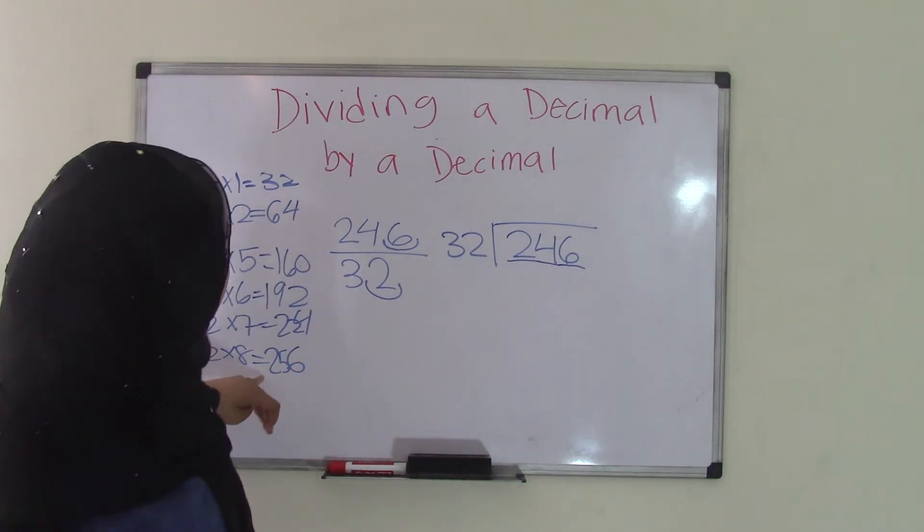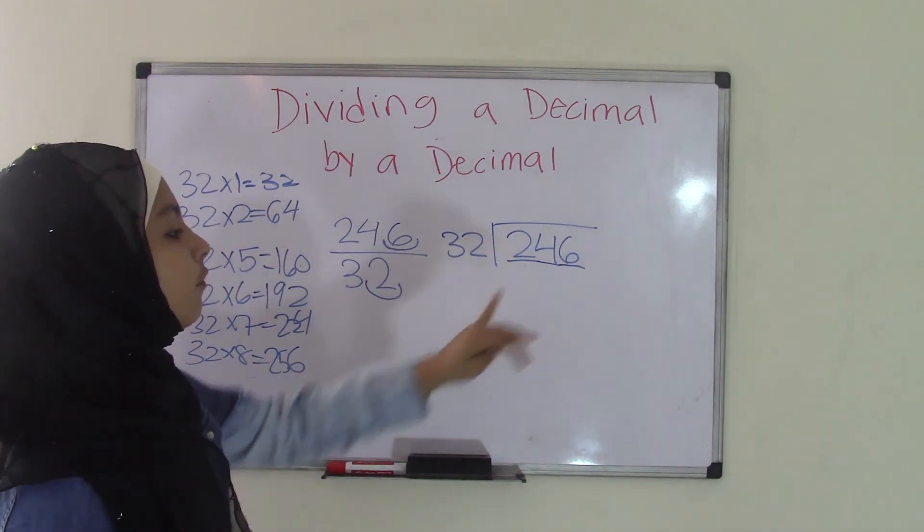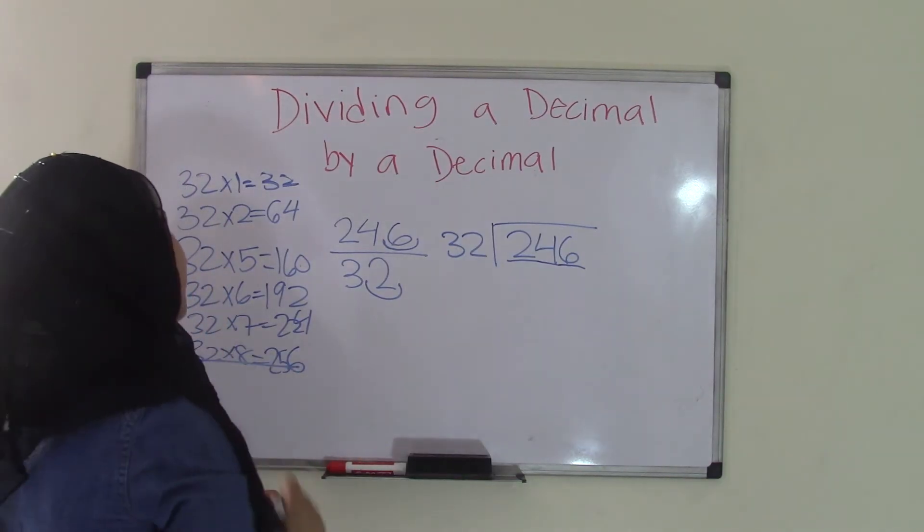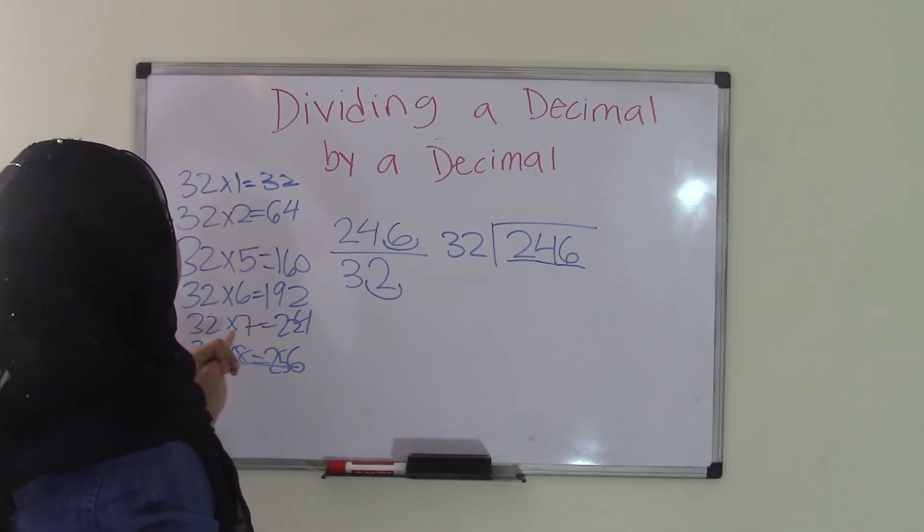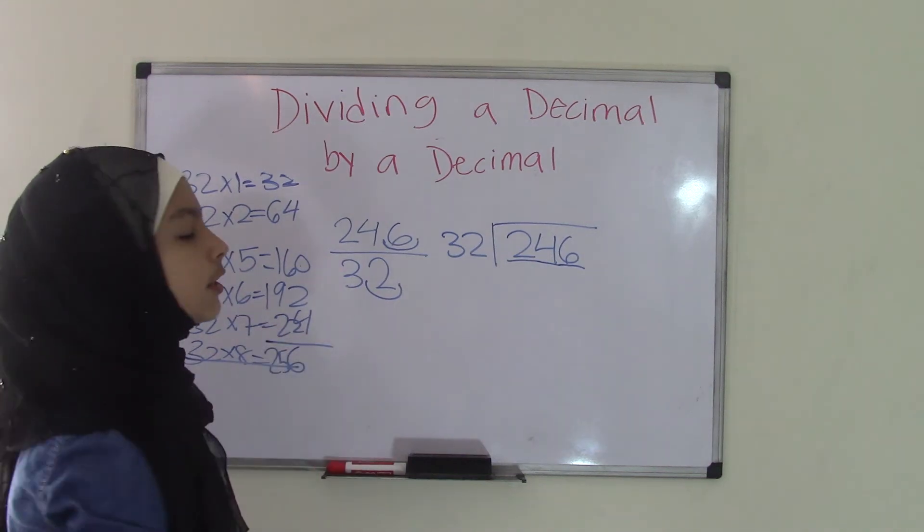Oh, look, 256 is greater than 246. We cannot do 32 times 8. So we're going to have to do 32 times 7, which equals 224.